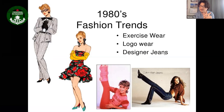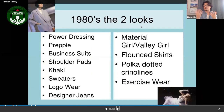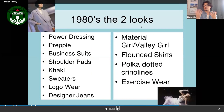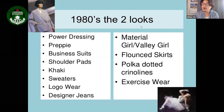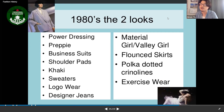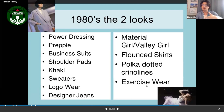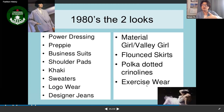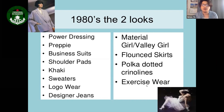Two looks defined 1980s women's fashion: power dressing — professional suits with shoulder pads, khaki pants, sweaters, and logo wear — and the material/valley girl look with flounce skirts, polka dot cardigans, and exercise wear for gym and yoga that people also wore on the street.